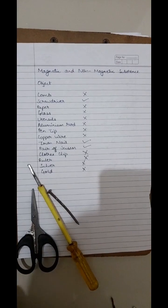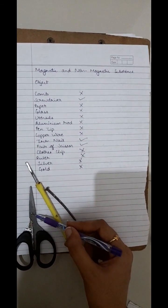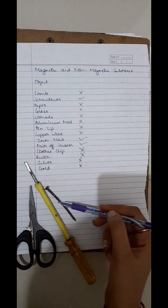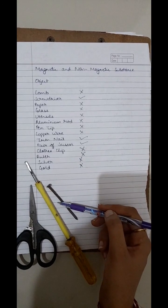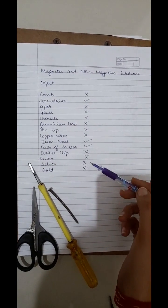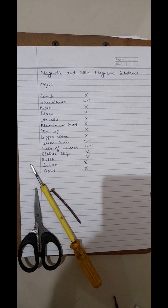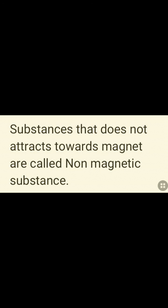So you can see only three objects — pair of scissors, screwdriver, and iron nail — these three objects attracted to a magnet, and others don't attract to a magnet. Therefore, substances that attract towards a magnet are called magnetic substances, for example iron nail. And the substances that do not attract towards a magnet are called non-magnetic substances, like comb, which is made up of plastic. Thank you.